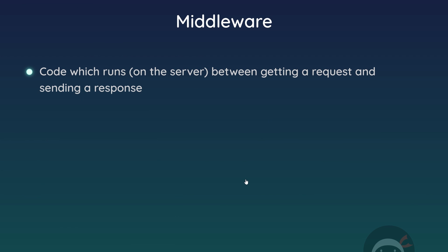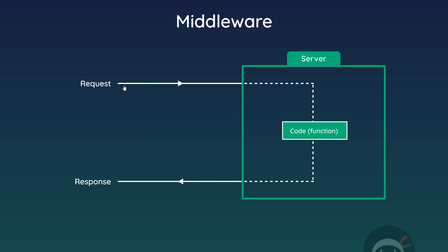Before we go any further with Express, I want to talk about something called middleware. Middleware is basically a name for any code which runs on the server between getting a request and sending a response. The use method is generally used to run some middleware code, and we've seen that already when we handled our 404 cases.